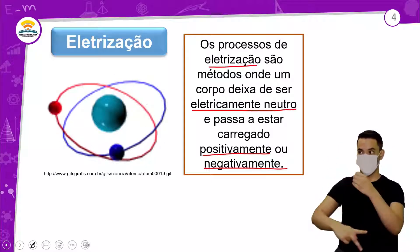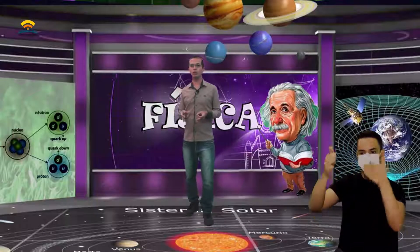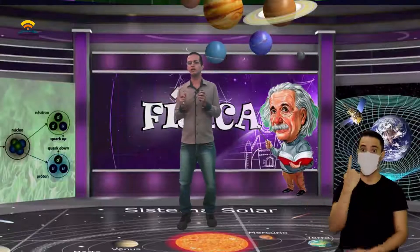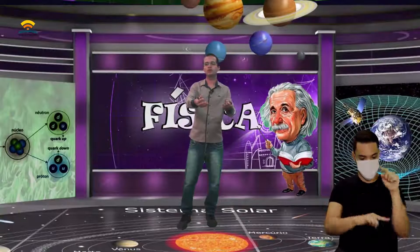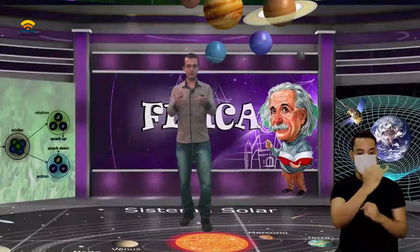Quando falamos em carregar um corpo, esse corpo vai doar elétrons ou vai receber elétrons. O elétron é negativo. Então, se eu arrancar elétrons de um corpo, ele vai ficar carregado positivamente — ele perdeu negativo. Se o corpo receber elétrons, ele está recebendo negativo, então fica eletrizado negativamente. Lembrando que o próton e o nêutron, que estão lá no núcleo, não se movem.